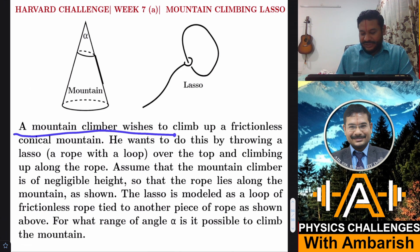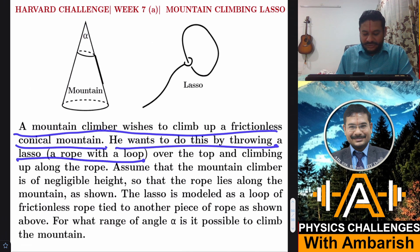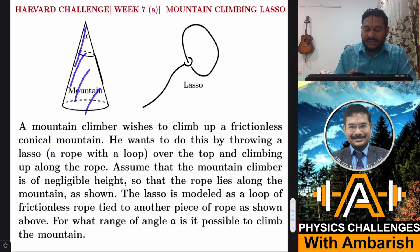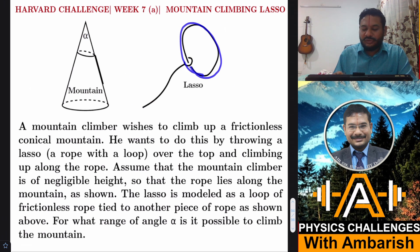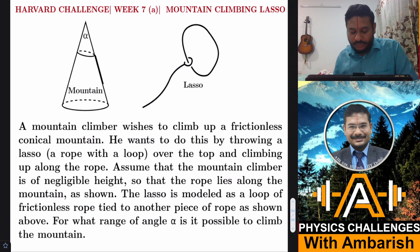A mountain climber wishes to climb up a frictionless conical mountain. He wants to do this by throwing a lasso, a rope with a loop, over the top and climbing up along the rope. So this is a mountain and I have one loop. So look carefully at the model of the lasso. So it has got one full loop and then there is another. So there are two pieces of ropes. It's not a single piece of rope. So one rope forms complete closed loop and another rope goes around this and it has a small loop like this and then it goes like this and it's a frictionless rope.